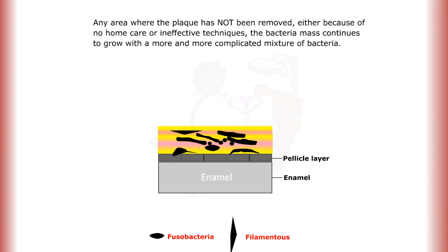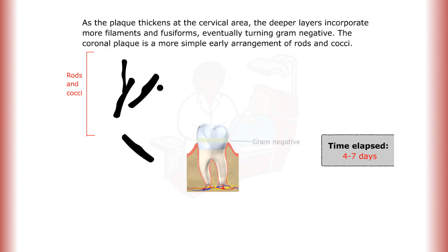As the plaque thickens at the cervical area, the deeper layers incorporate more filaments and fusiforms, eventually turning gram-negative. The coronal plaque is a more simple early arrangement of rods and cocci as the plaque continues to mature.